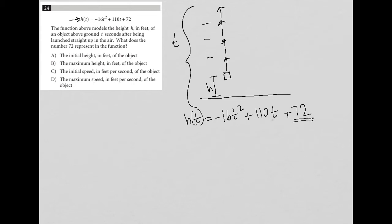Well, this number 72 does not have a t associated with it. It's not multiplied by t, which tells me from experience that it must be similar to what we would consider a y-intercept.